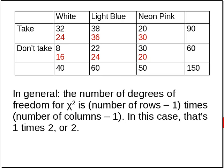In general, the number of degrees of freedom for chi-squared is the number of rows minus one, times the number of columns minus one. In this case, that's one times two, or two degrees of freedom.